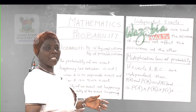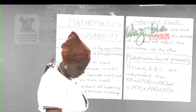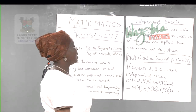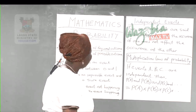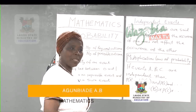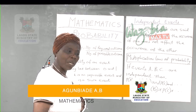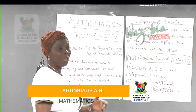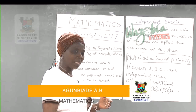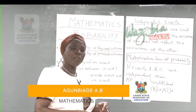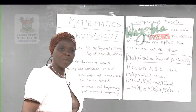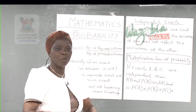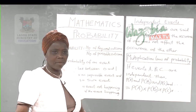Having explained mutually exclusive events, the next topic is independent events. Two or more events are said to be independent if the occurrence of one does not affect the occurrence of the other in any form.